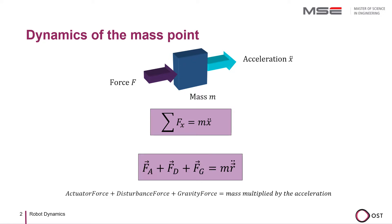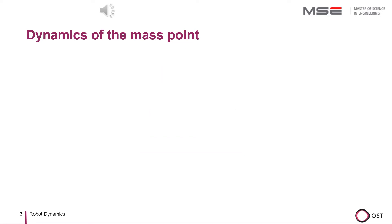The force FA is the actuator force, which is the force that we apply to the mass with a drive element, for example, a motor. But there are also disturbing forces such as friction, which we call Fd here. In addition, the gravitational force Fg also acts on the mass. With this, we have found the dynamics of the mass point, including disturbance and gravitational forces.